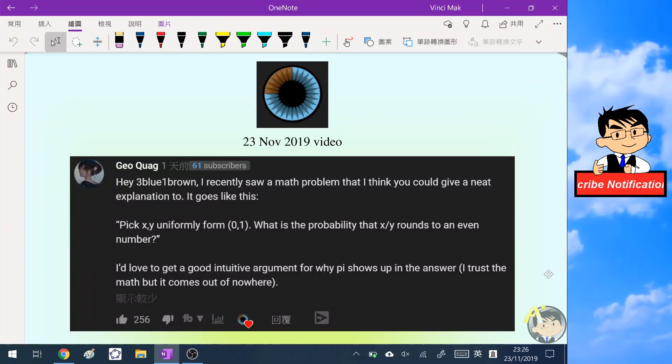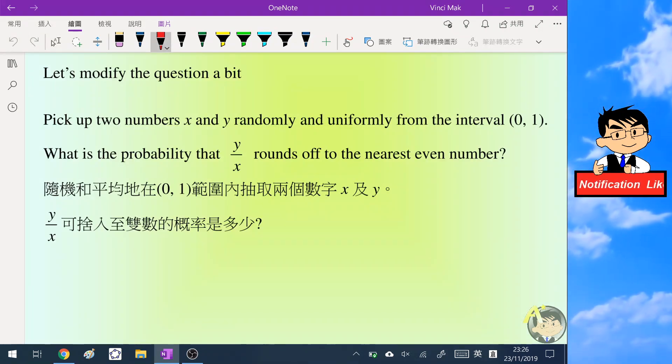Hello everyone, in this video I'm going to share a question suggested by a viewer from one of the very famous math channels, 3Blue1Brown, which is also one of my favorite math channels. Let's have a look at the question. I modified the question a bit, and it states that we need to pick up two numbers x and y randomly and uniformly from the interval 0 to 1. We need to find the probability that y/x rounds off to the nearest even number. This is a very interesting question, so if you have time please pause the video and have a try, then you can check the answer afterwards.